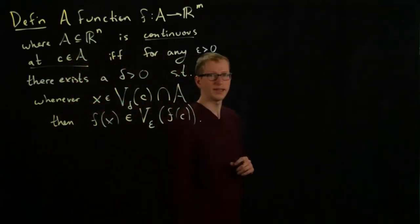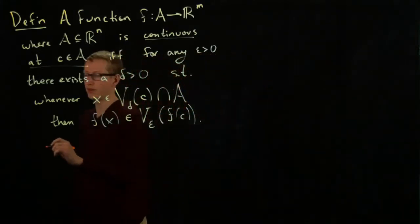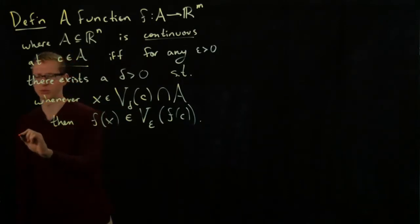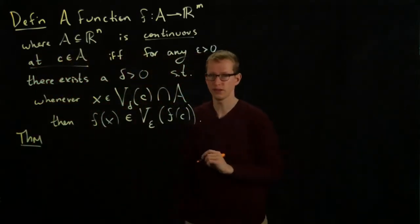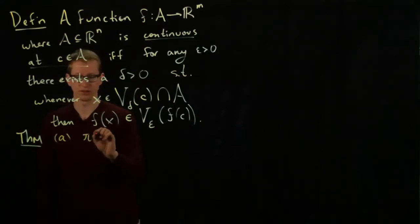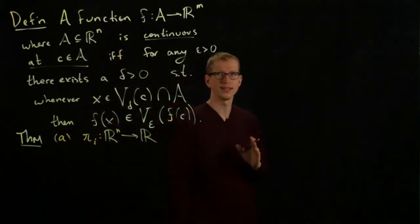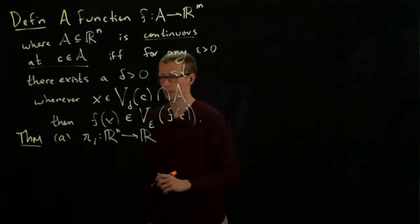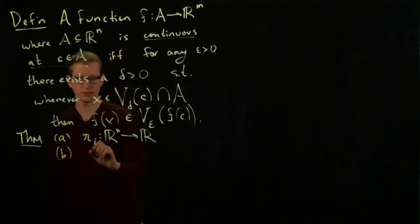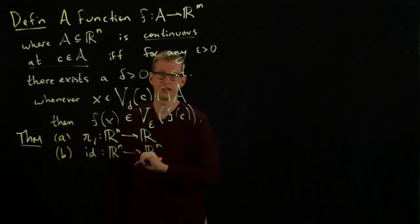So it helps to consider some examples of continuous functions, and for that we'll list a few somewhat obvious examples. I'll state these examples in the form of a theorem. I'll list it as a list, but (a) the projection from R^n to R, so this is the ith projection onto the ith factor in the first coordinate, is continuous. (b) The identity map from R^n to R^n is continuous.